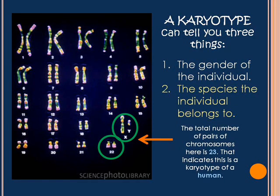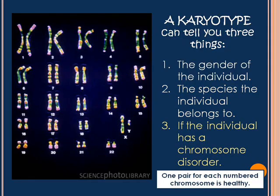The second thing a karyotype can tell you is the species the individual belongs to. The total number of pairs of chromosomes shown here on the screen is 23 — 22 autosome pairs and one sex chromosome pair, so 23 pairs total. That tells you that we are looking at a karyotype for a human.